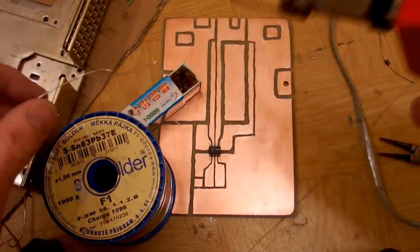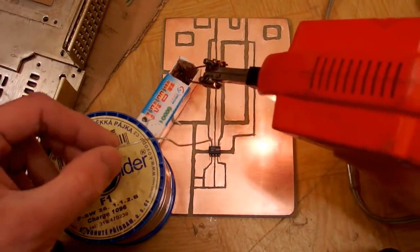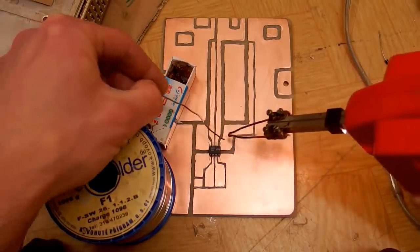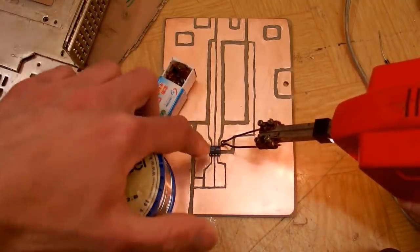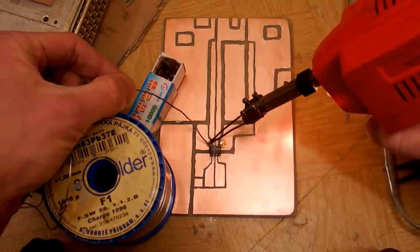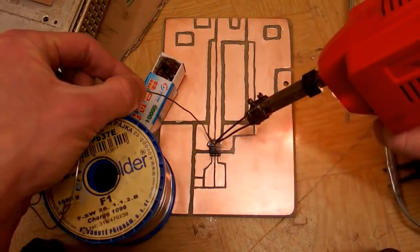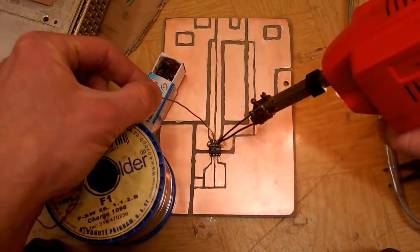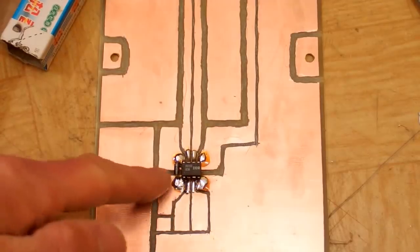My soldering gun, some rosin, some leaded solder of course, and let's try soldering it. So it's the chip, the diode.